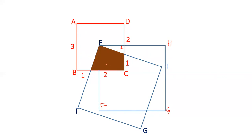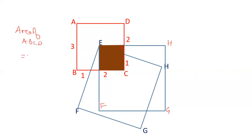Now this is the shaded portion. From this shaded portion, remove this part and put it here. So this is one fourth of the whole square ABCD. The area of ABCD is 3 × 3 = 9. So the area of this particular shaded region will be 9/4. It is one fourth of ABCD, dividing this square into one fourth part. So this portion is 9/4.